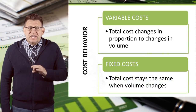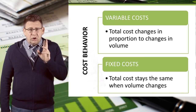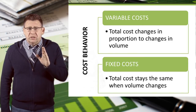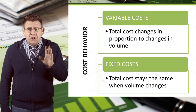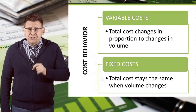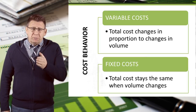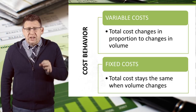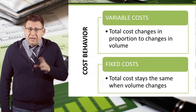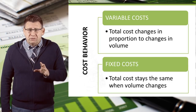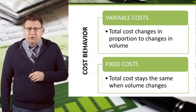Fixed costs stay constant in total over a wide range of volume levels. So as volume changes, fixed costs do not. For example, McDonald's pays a store manager a fixed salary. The manager gets paid the same amount regardless of how many hamburgers they sell.